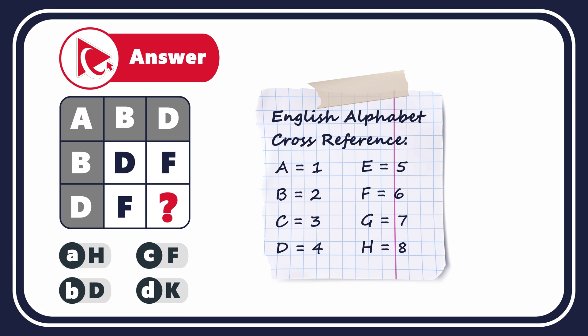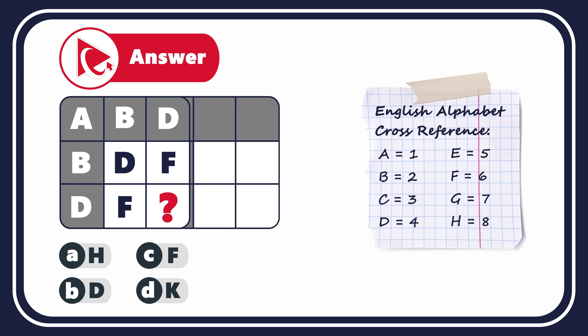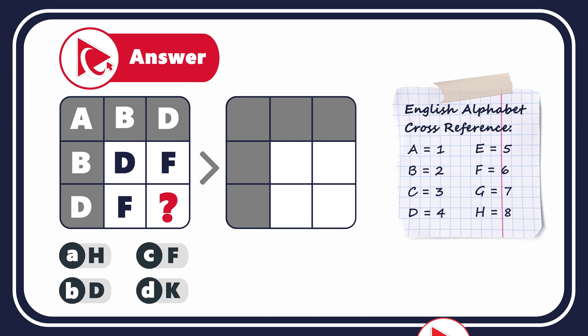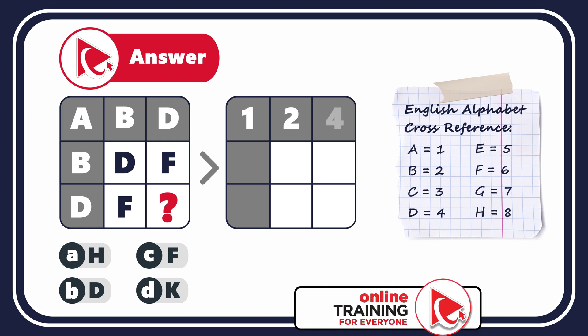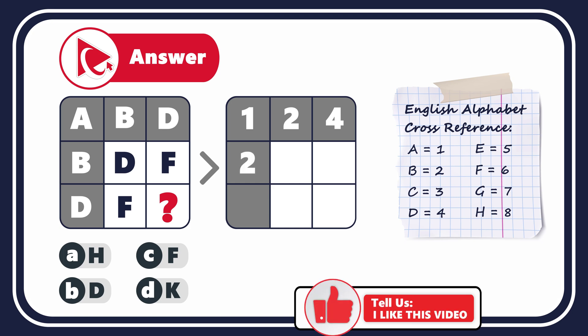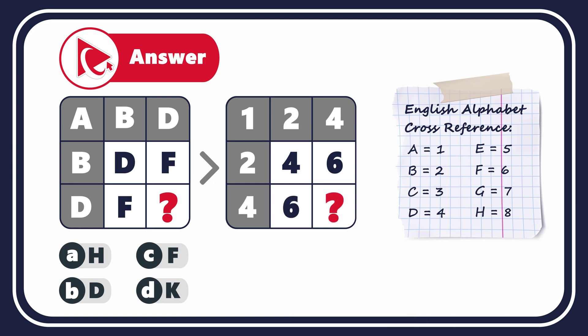So for the first row, the numbers will be 1, 2 and 4. For the second row, the numbers would be 2, 4, and 6. And for the third row, the numbers will be 4 and 6, and that would be the missing number. The next step is to determine what's happening with the numbers and how to calculate the missing number.